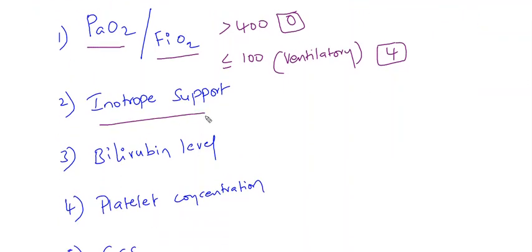Coming to inotrope support, this is regarding blood pressure. If patient does not have hypotension, 0 points will be given. If the patient is requiring high level of inotropic support - dopamine more than 15 mcg per kg per minute or epinephrine more than 0.1 mcg per kg per minute - then that will be given as the highest number of points, 4 points.